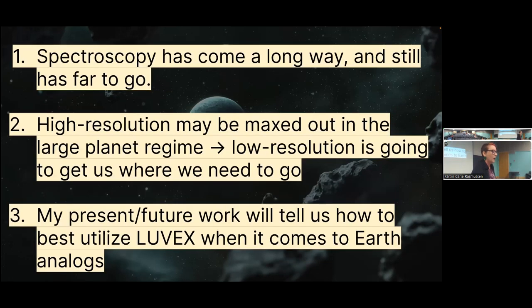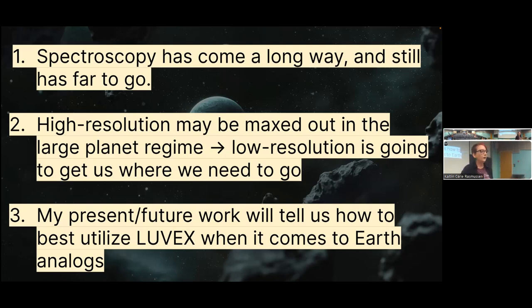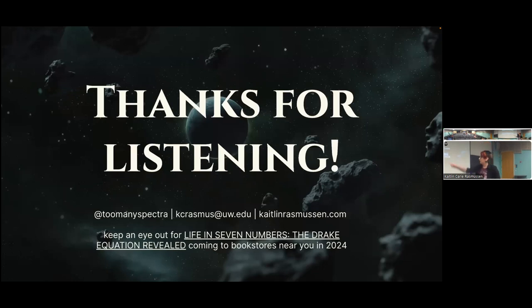In conclusion, spectroscopy has come a really long way — people were trying to take spectra of planets in the nineties, and it still has quite a ways to go in terms of observing Earth analogs. High resolution may be maxed out in the large-planet regime for now unless we come up with better methods. But low resolution for the present is really what's going to get us where we need to go. My present and future work is ultimately going to tell us how we can best utilize LUVOIR when it's 2045 and we're finally looking at Earth analogs. Thanks for listening. I'm on Twitter, here's my email, I have a website, and I'm also writing a book called 'Life in Seven Numbers: The Drake Equation Revealed' — in stores 2024.